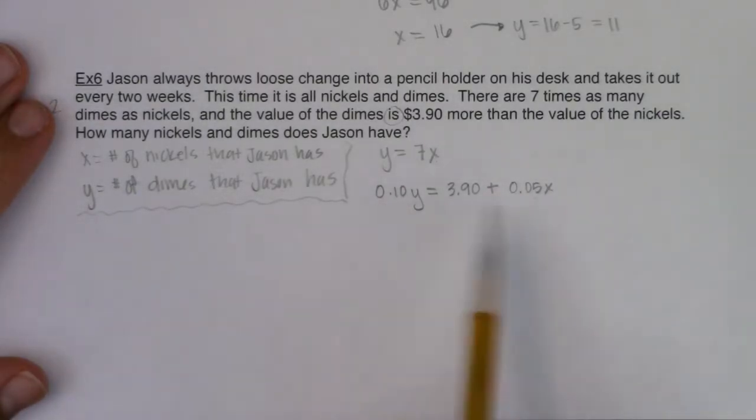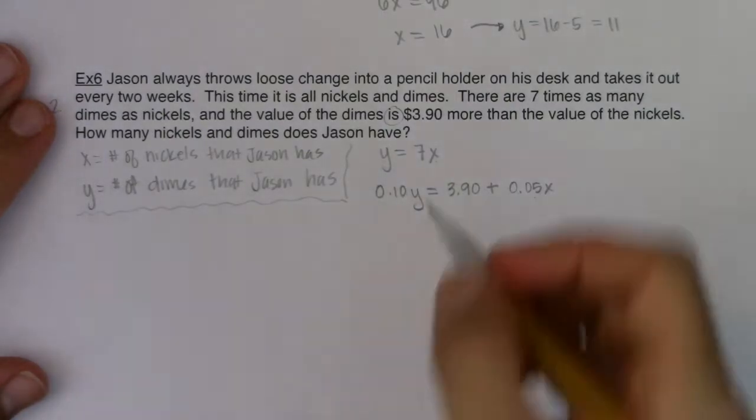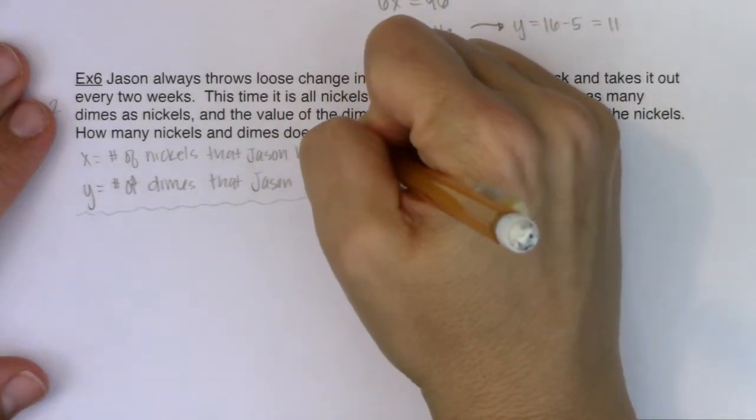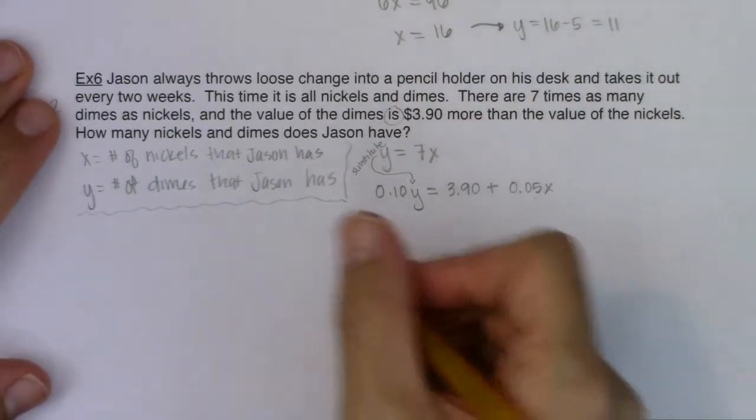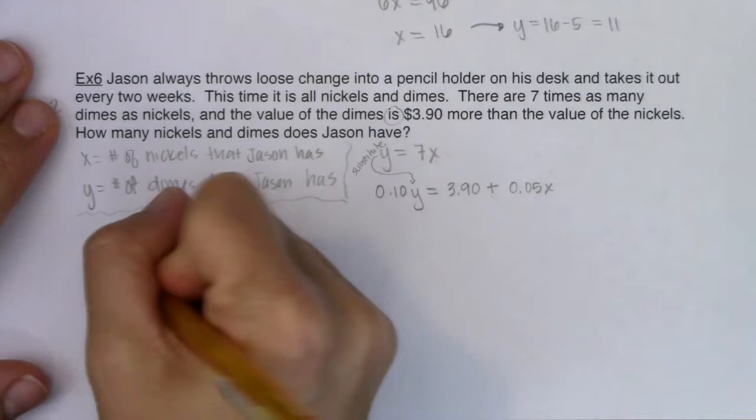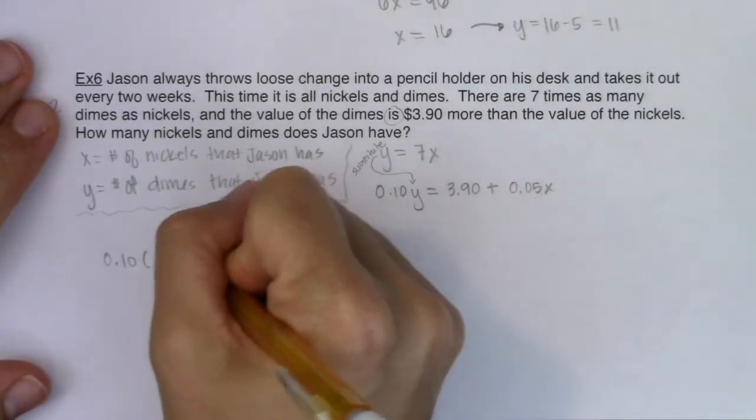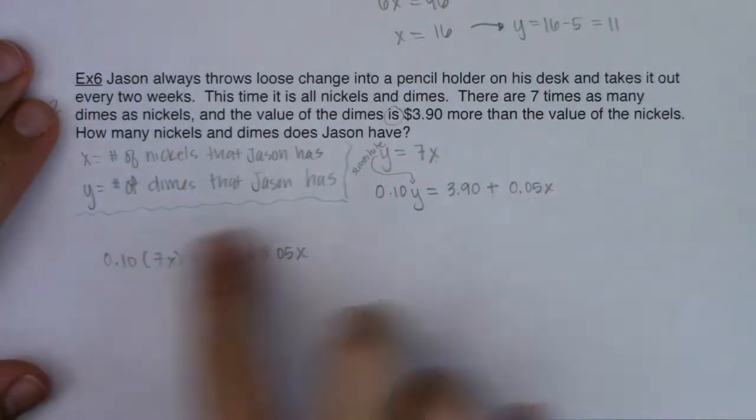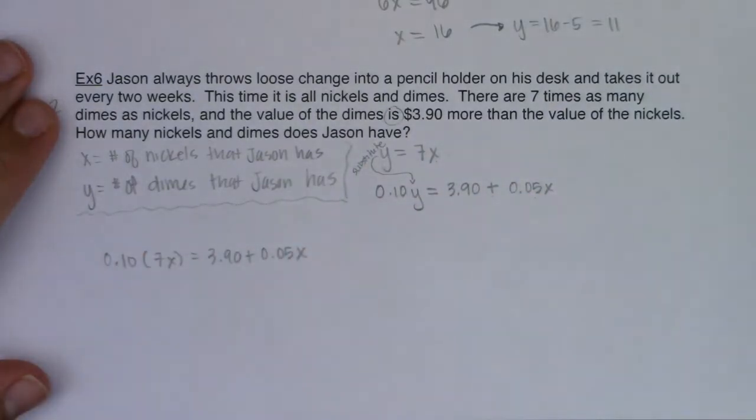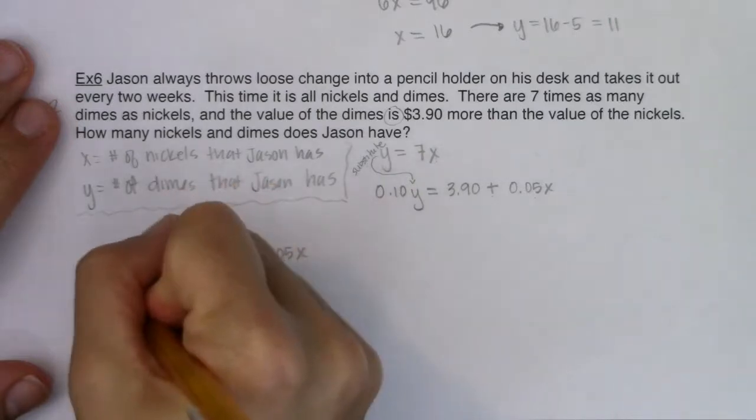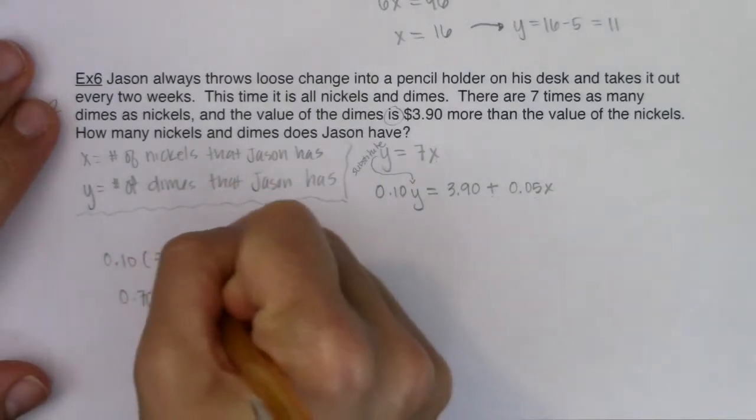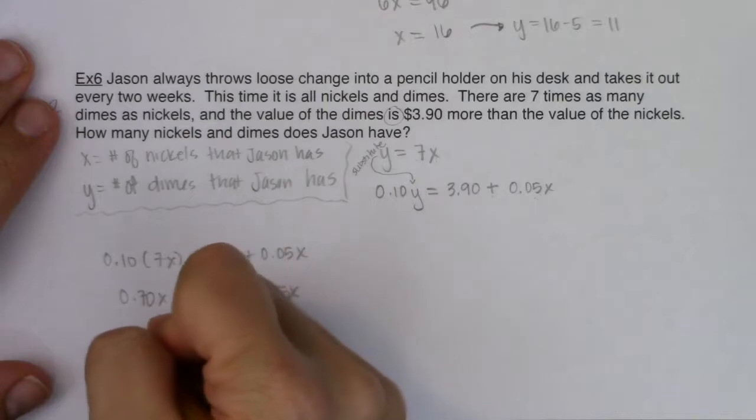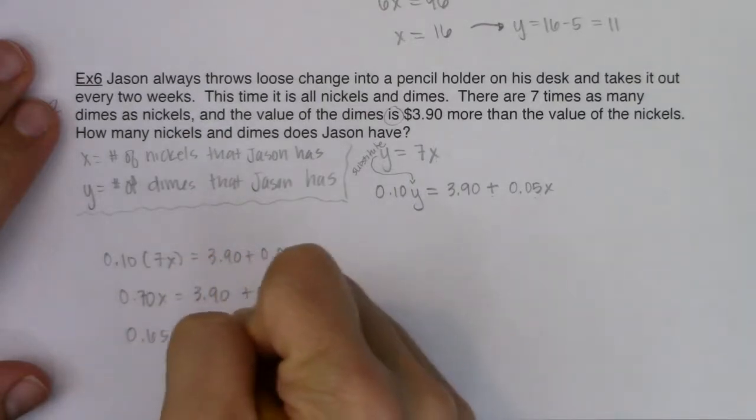Alright, so we have all of this. Now, you could use elimination or substitution. I see this equation is already solved for Y, so I'm going to use substitution. I'm going to go ahead and say 0.10, and instead of Y, I'm going to write 7X is equal to $3.90 plus 0.05X. And at this point, I've taken my 2 by 2 and I've simplified it to a 1 by 1. So when I multiply this out, 0.10 times 7 is 0.70. That will equal $3.90 plus 0.05X. I'm going to subtract the 0.05X over. So I will get 0.65X is equal to $3.90.